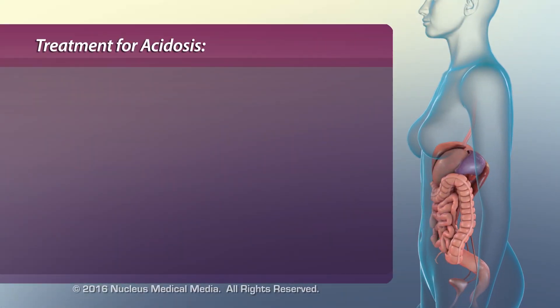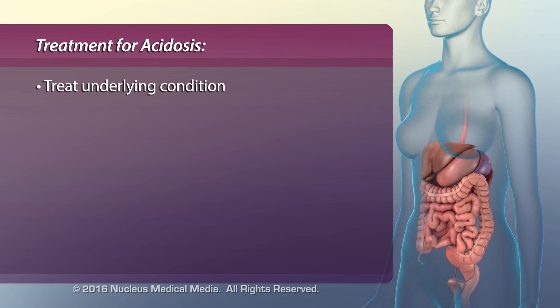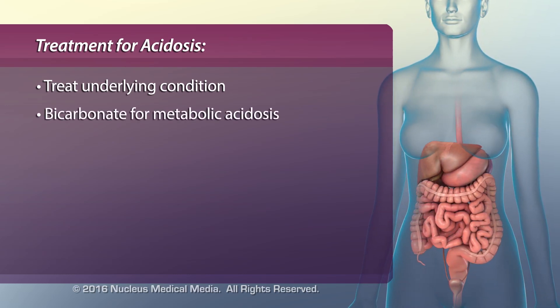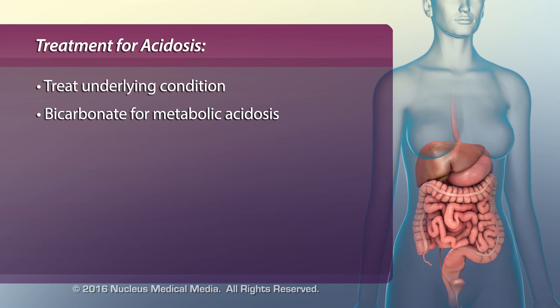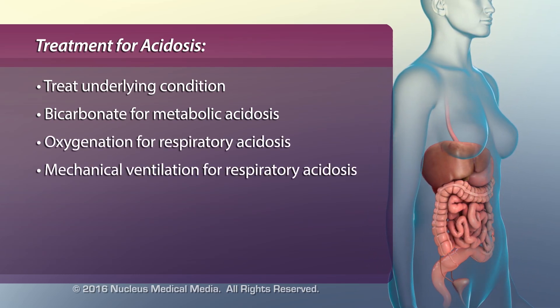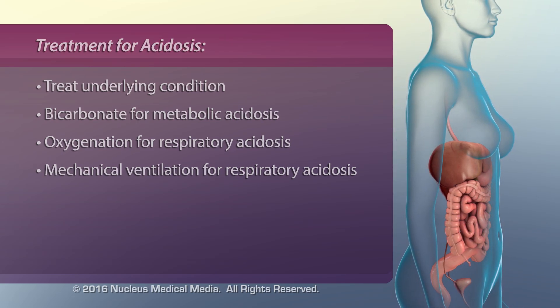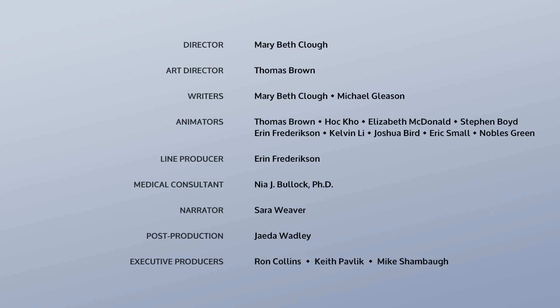Since acidosis is the result of a variety of conditions, treating the underlying condition is the first step. Bicarbonate may be used to treat metabolic acidosis, and oxygenation and ventilation may be used to treat respiratory acidosis.